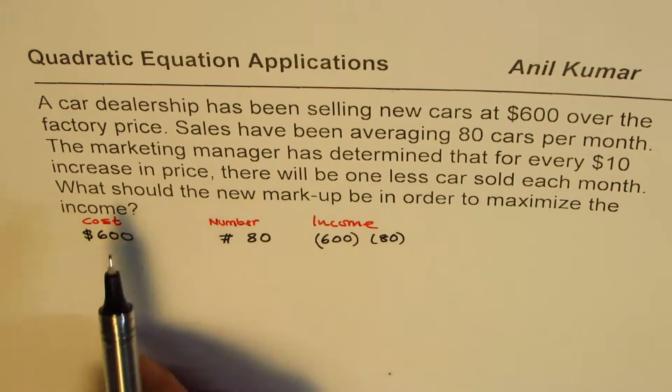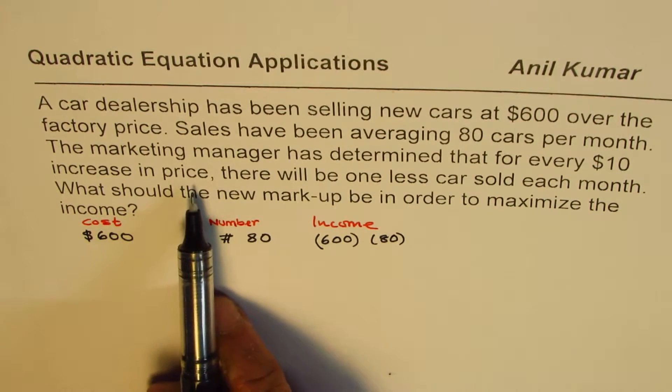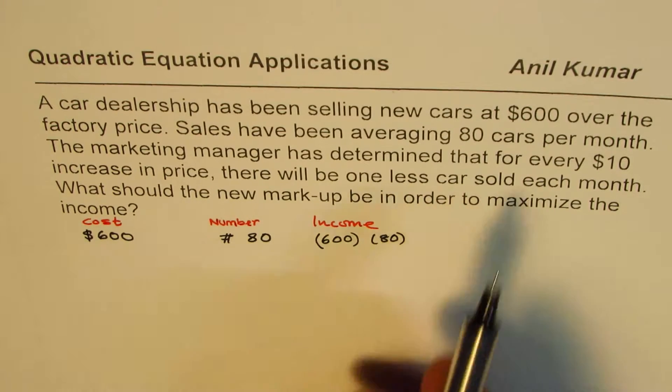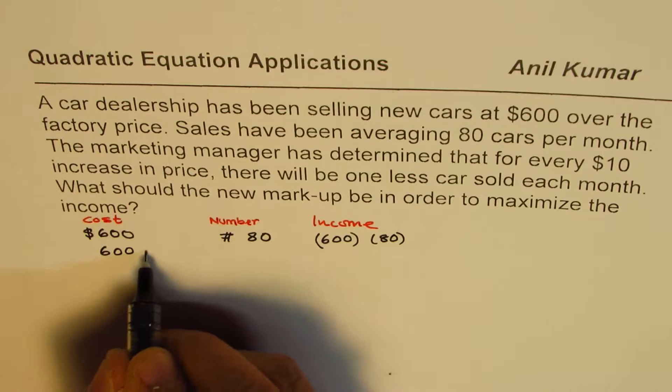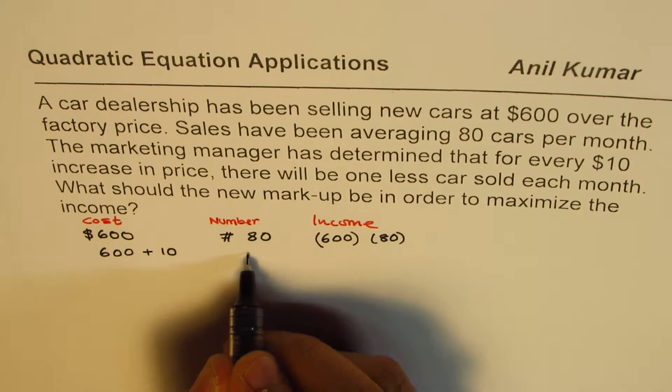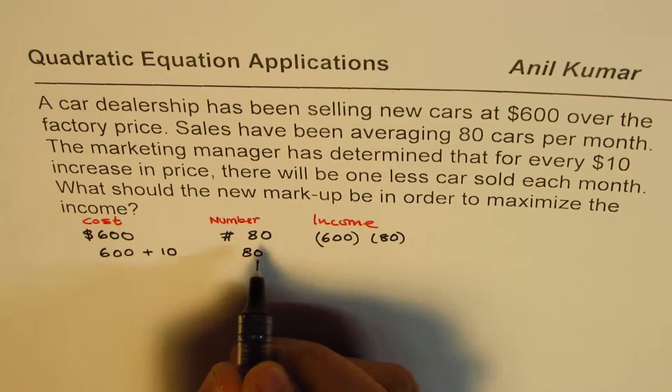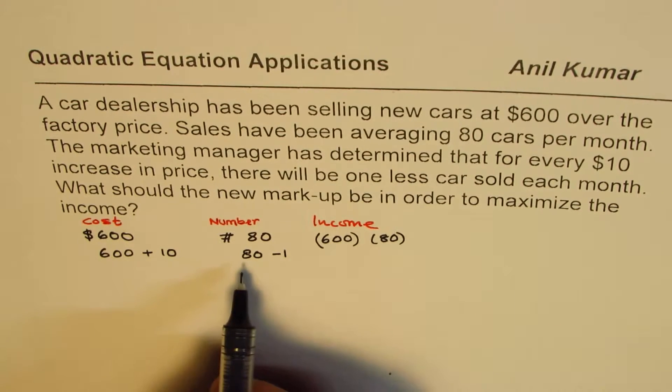Now it says the marketing manager has determined that for every $10 increase in price, there will be one less car sold. That is to say, if we increase this price from 600 to plus 10, the number of cars sold will be 80 minus one. Do you see that? That is how it is going to progress.